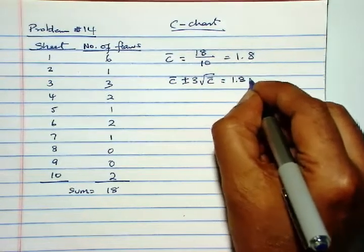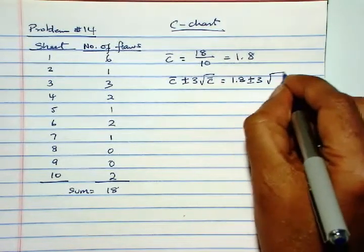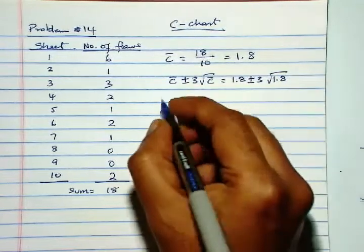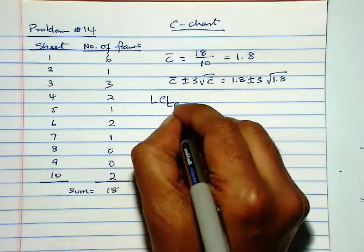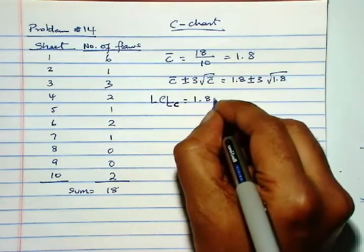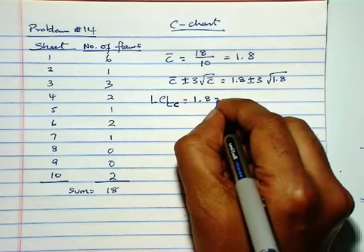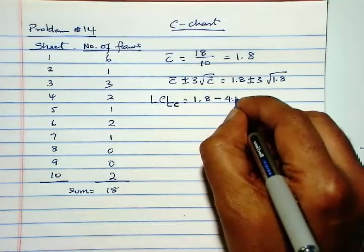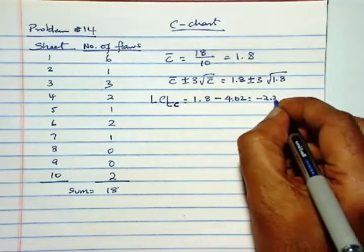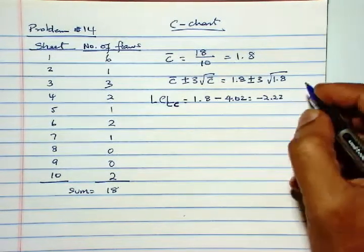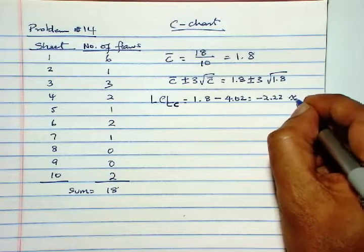So our lower control limit for c is 1.8 minus 4.02, which is minus 2.22, but we can't have a negative value, so this should be converted to 0.